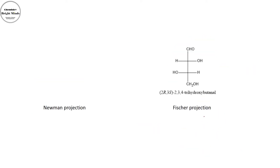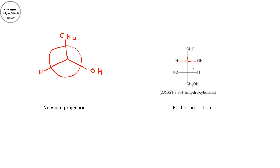Now if I have the Fischer projection and need to convert it back to a Newman projection, I draw the circle and then draw a flipped Y-shape inside it. I write the front-carbon groups directly from the flipped Y, placing hydroxyl and hydrogen accordingly, then flip the back groups — so the CH2OH stays, and hydroxyl and hydrogen swap sides. A key check: if the two hydroxyl groups are on the same side in the Newman projection, they will be on different sides in the Fischer projection, and vice versa — they are always opposite to each other.